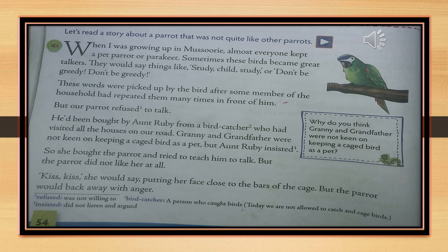He had been bought by Aunt Ruby from a bird catcher who had visited all the houses on our road. Granny and grandfather were not keen on keeping a caged bird as a pet, but Aunt Ruby insisted. 'Insisted' means did not listen and argued, or forcing to do something. 'Bird catcher' means a person who catches birds. 'Keen' means not excited — so they were not interested.